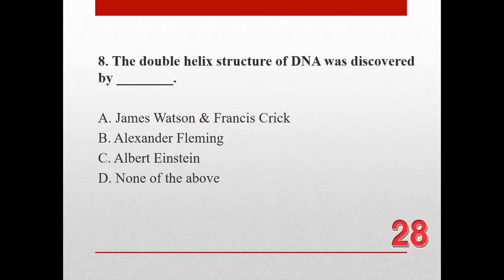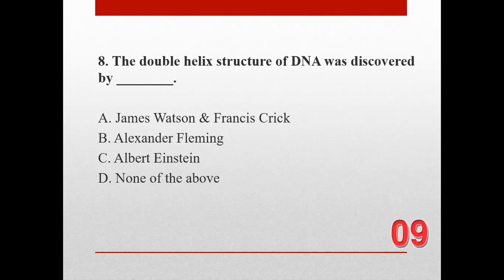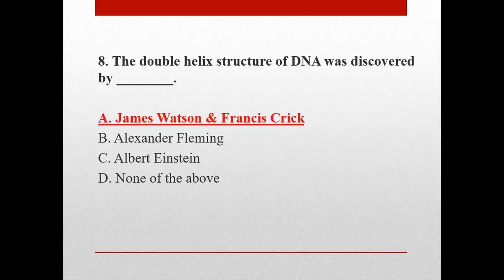Number eight. The double helix structure of DNA was discovered by: A. James Watson and Francis Crick, B. Alexander Fleming, C. Albert Einstein, and D. None of the above. The correct answer is A. James Watson and Francis Crick.